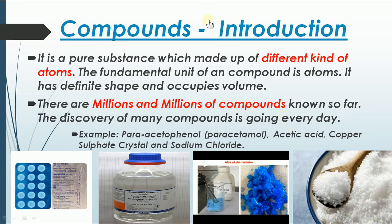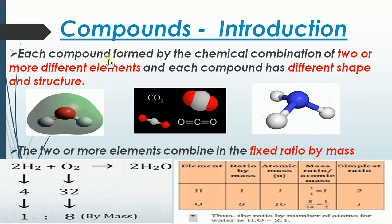These are examples of compounds. When you find two different kinds of elements which are bonded together, we can call them simply as compounds. Each compound is formed by a chemical combination of two or more different elements, and each has a different shape and structure. This is a very important point we have to be clear about.